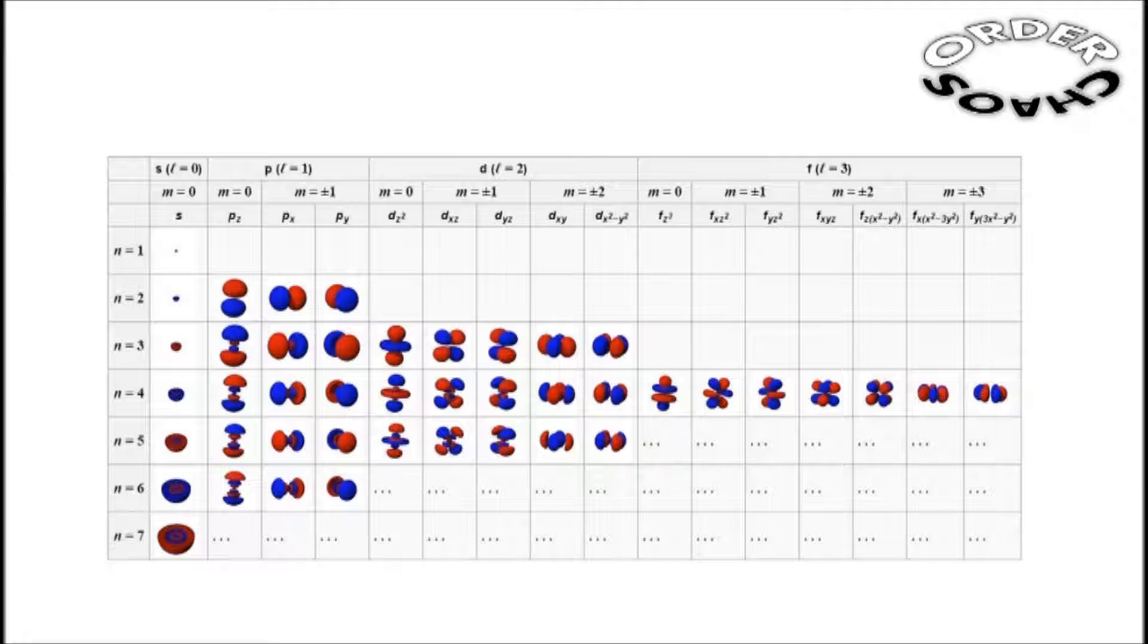In these orbitals, electrons do not move in an orderly fashion, instead chaotically whizzing around without a fixed trajectory. Yet, despite the chaos, they form mathematically perfect orbitals, with each orbital able to accommodate up to 2 electrons.